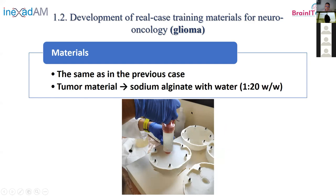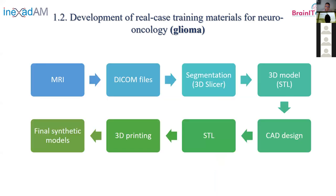We selected sodium alginate — a solution of sodium alginate with water — placed there, and then the student had to remove it with a vacuum machine. What we did was more or less the same process: we had MRI images in DICOM format, performed segmentation again in 3D Slicer, obtained the STLs, introduced them in CAD design software, obtained the final STL, did 3D printing, and produced the final synthetic models.